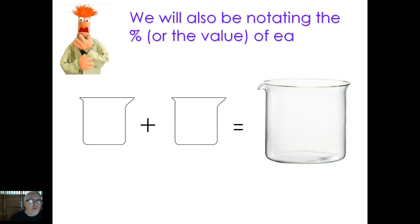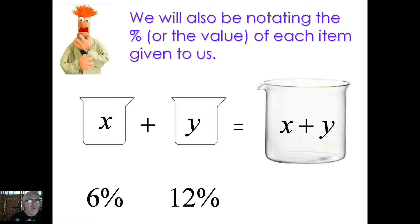Now, it's not just going to be the amounts, but it's also going to be the percent or the value of each item given to us. So for example, we may not know what X and Y are, but we were most likely going to be given a percent. So for example, it's going to be 6 percent of some X plus 12 percent of some Y, and our goal is to reach a certain percentage with a certain amount. We'll be given just enough information to solve these, so work carefully along with us here.